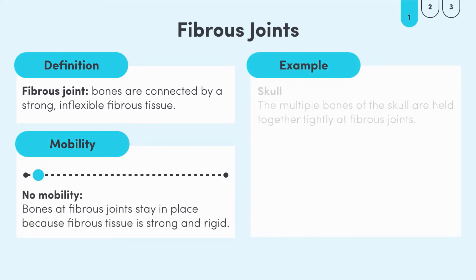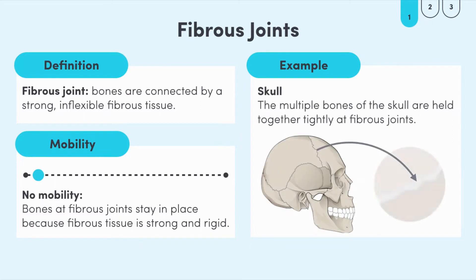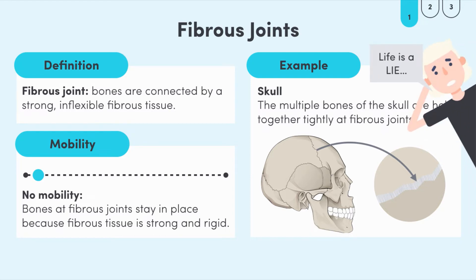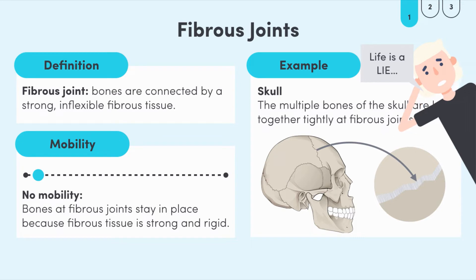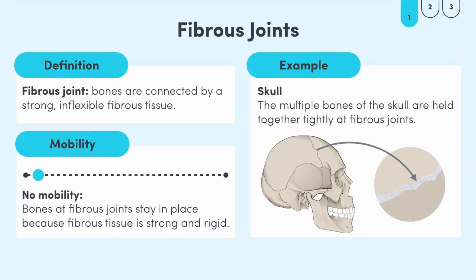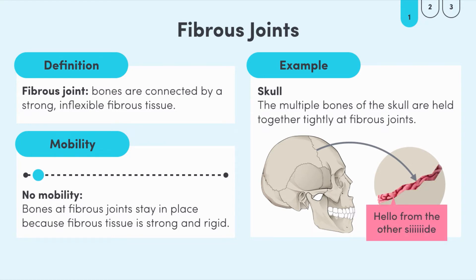For example, our skulls are made of more than one bone. All of these bones are connected by fibrous joints. It's probably a good thing that they can't move, because otherwise our brain would be exposed and vulnerable to damage. A helpful brain trick to remember this classification: fibrous sounds like 'fused', so the bones are pretty much fused together and they don't move at all.